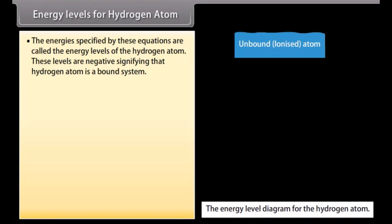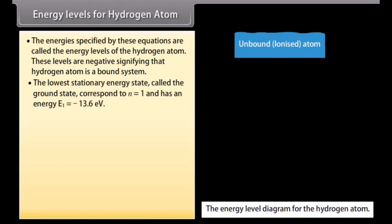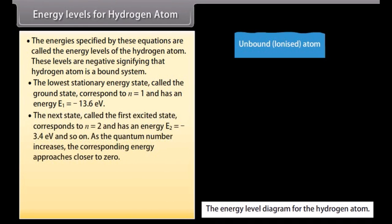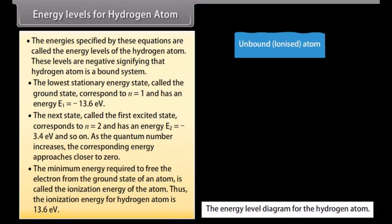These levels are negative signifying that hydrogen atom is a bound system. The lowest stationary energy state called the ground state correspond to N as 1 and has an energy E1 equals minus 13.6 electrovolt. The next state called the first excited state correspond to N as 2 and has an energy E2 equals minus 3.4 electrovolt and so on. As the quantum number increases, the corresponding energy approaches closer to zero. The minimum energy required to free the electron from the ground state of an atom is called the ionization energy of the atom. Thus the ionization energy for hydrogen atom is 13.6 electrovolt.